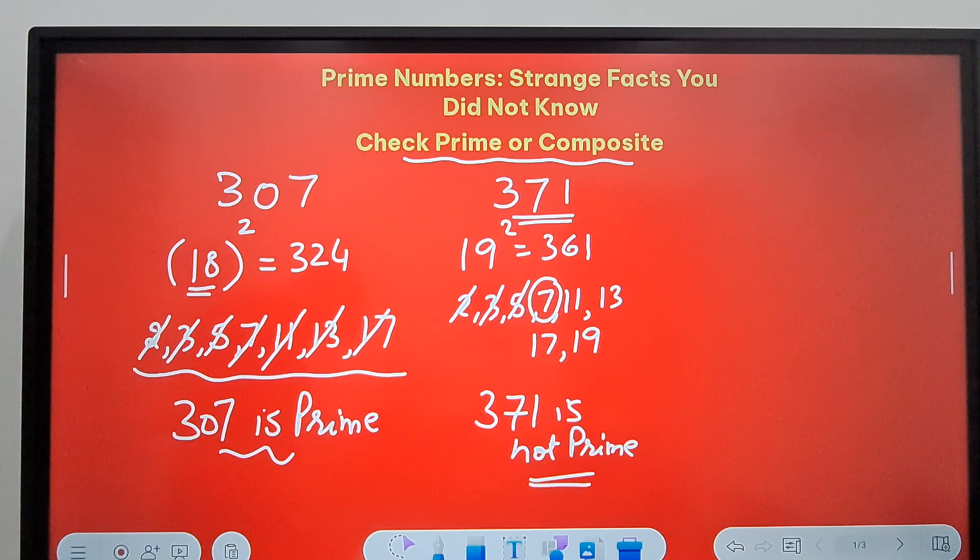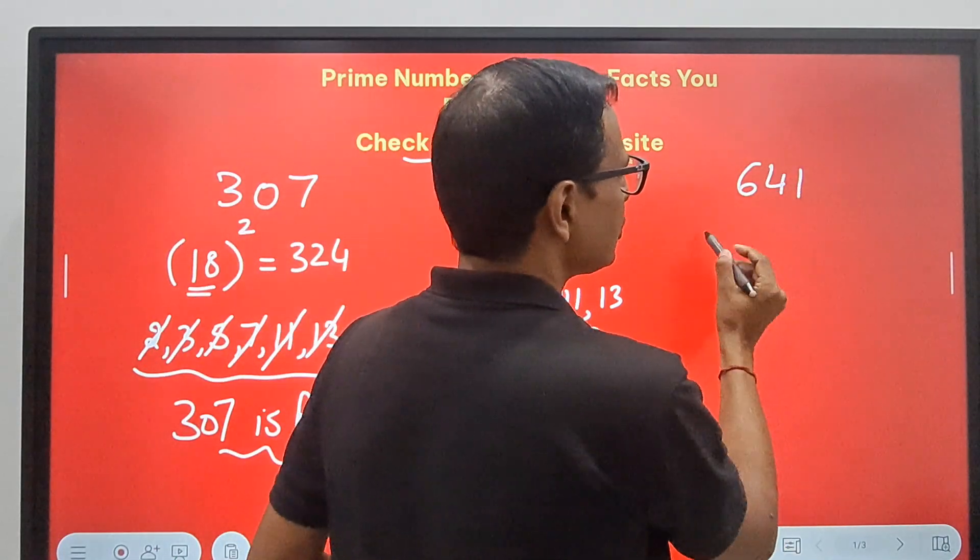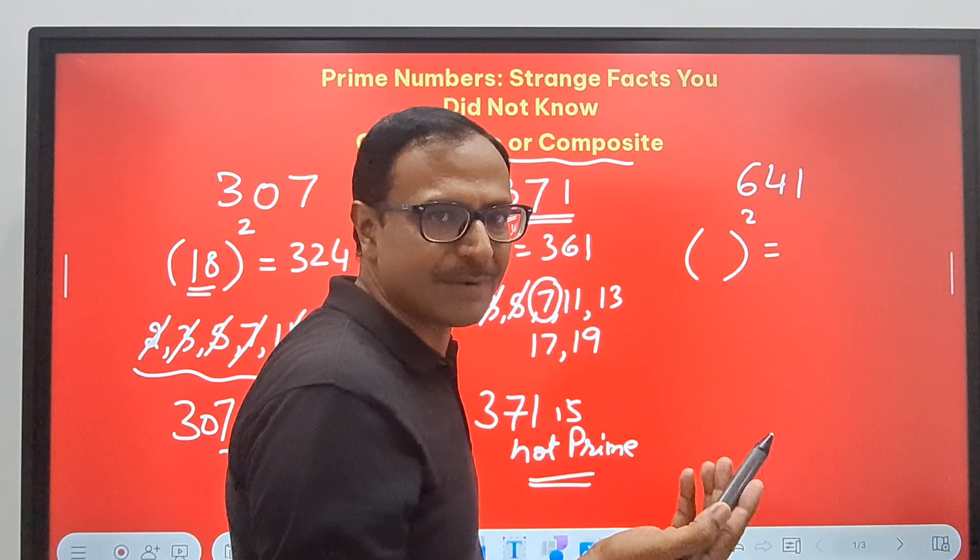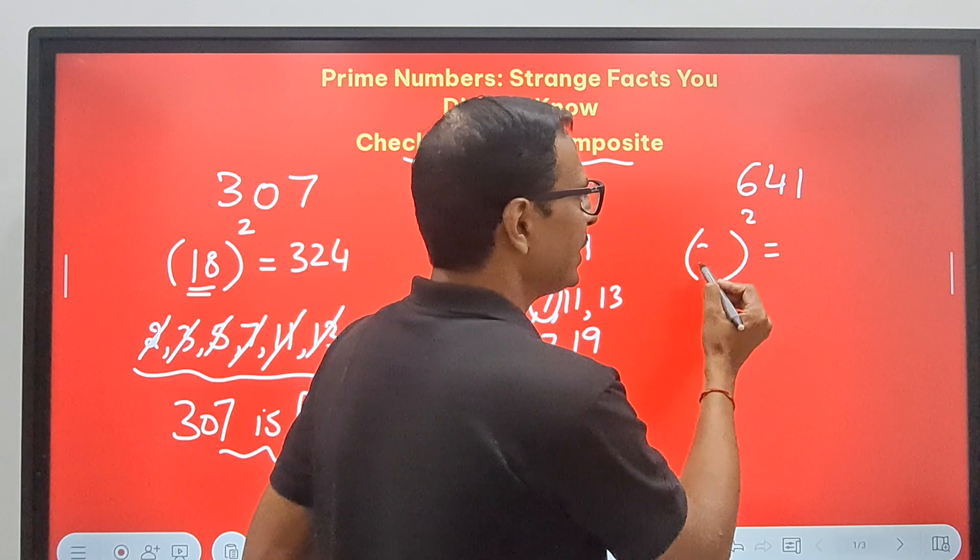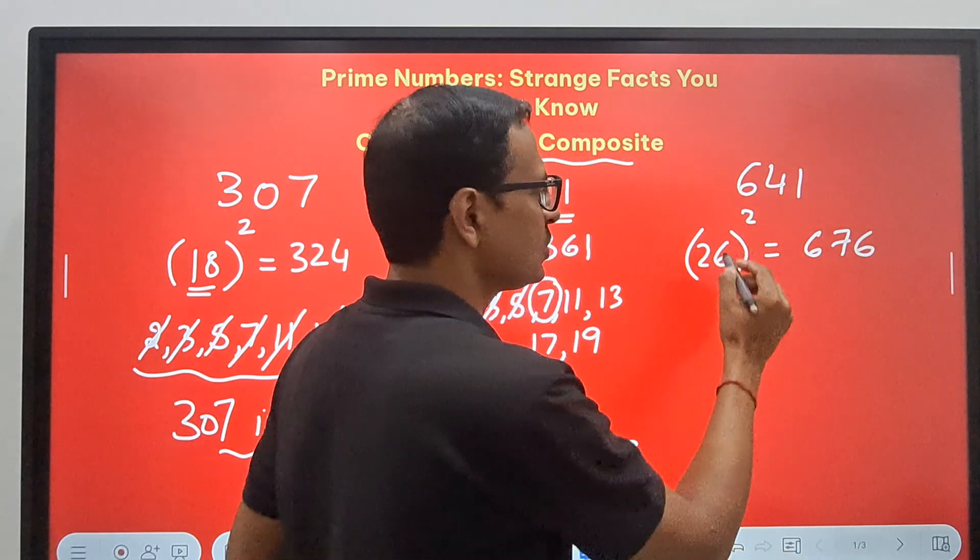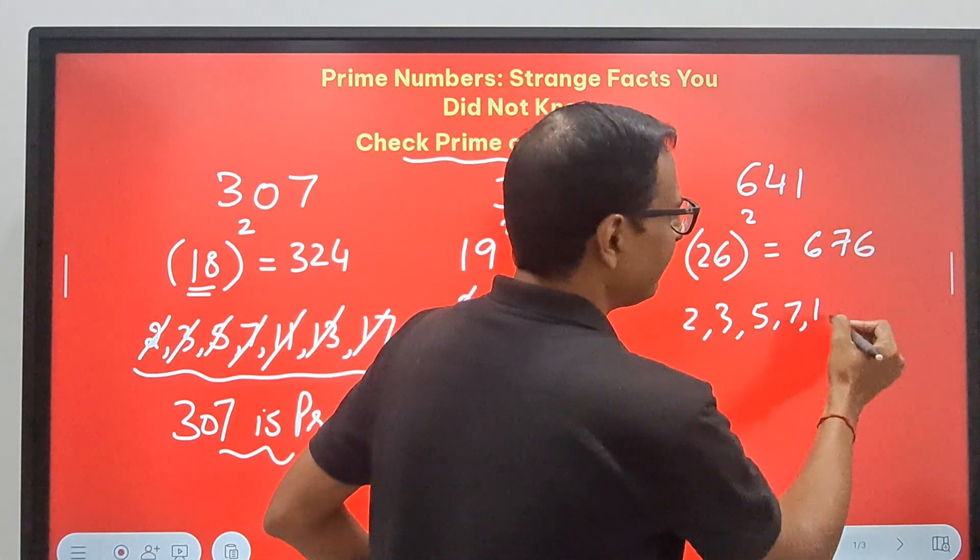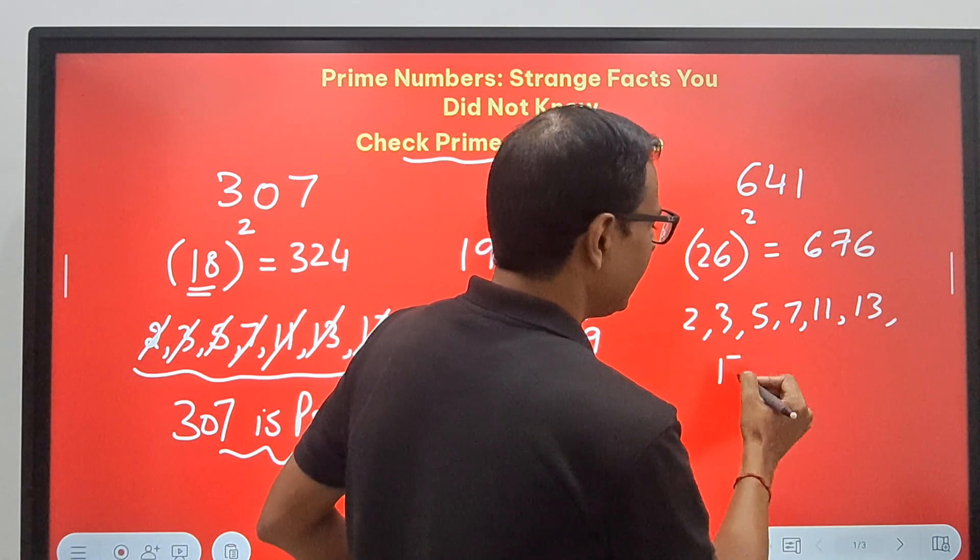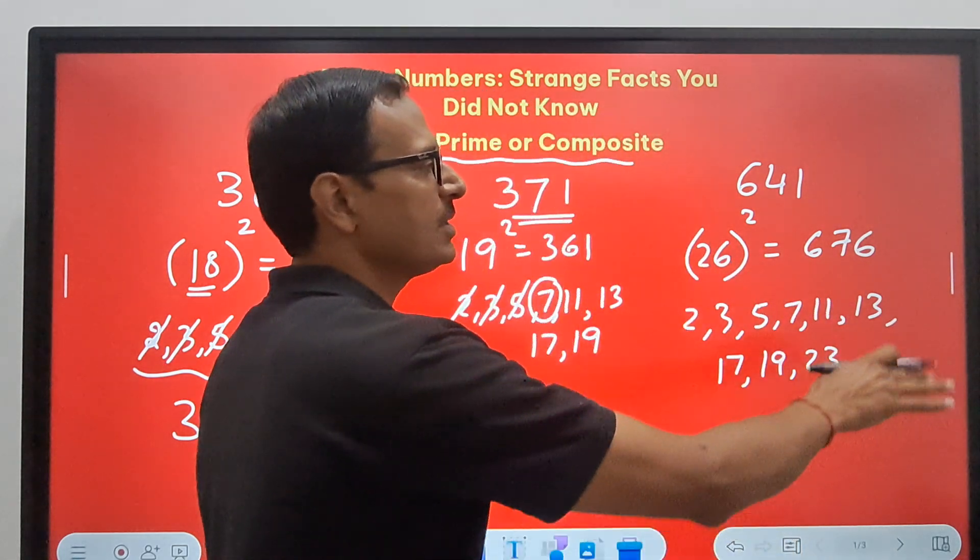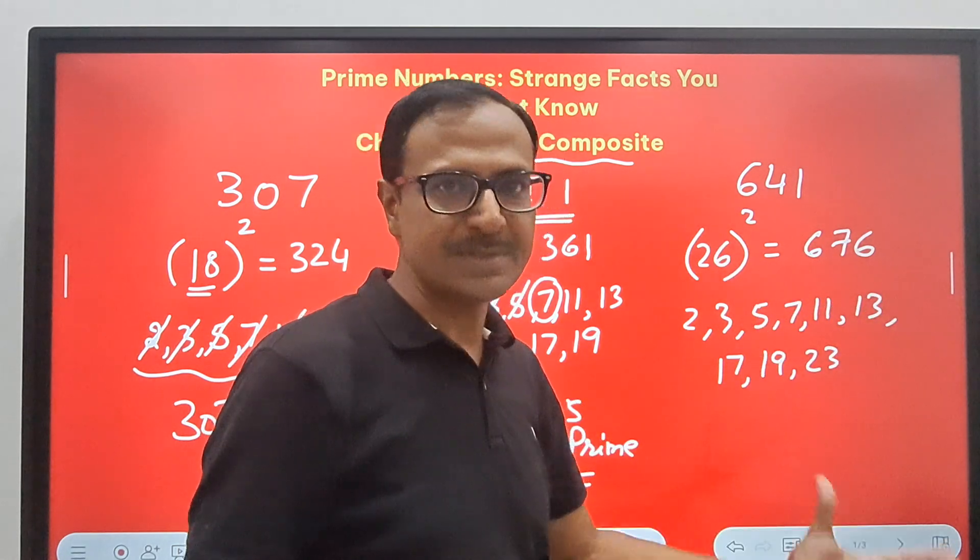Now if I take another example, suppose 641. So which square is very close to 641? 25 square is 625, and so 26 square is 676. And below 26 you have all these prime numbers: 2, 3, 5, 7, 11, 13, then 17, 19, and then 23.